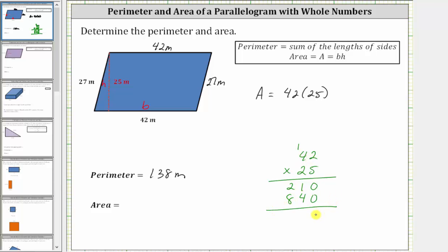And now we add. The area is equal to 1050. And because the lengths are in meters, the area is square meters or meters squared. Exactly 1050 square meters will fit inside the parallelogram. I hope you found this helpful.